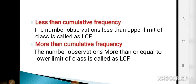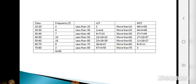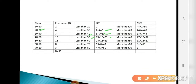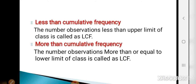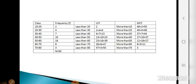LCF means there are 2 observations less than the upper limit of the first class (20). There are 6 observations less than 30, 13 less than 40, 23 less than 50, and so on. For MCF, there are 50 observations more than or equal to the lower limit of the first class (10), 48 more than or equal to 20, and so on.